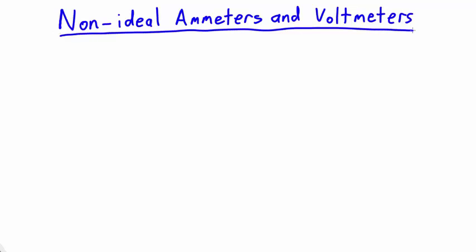In this video we are going to explore how real ammeters and voltmeters are different to the ideal ones that we've been looking at in the course so far. Just as batteries are not perfect and contain some internal resistance, real voltmeters and ammeters are not completely ideal and will slightly change the circuit that they are measuring.